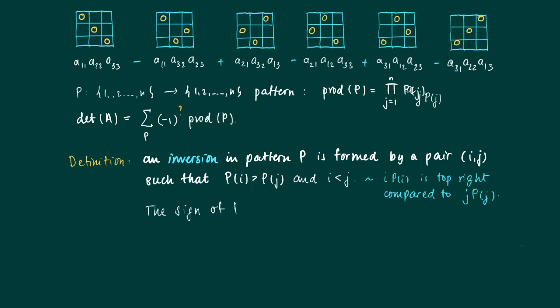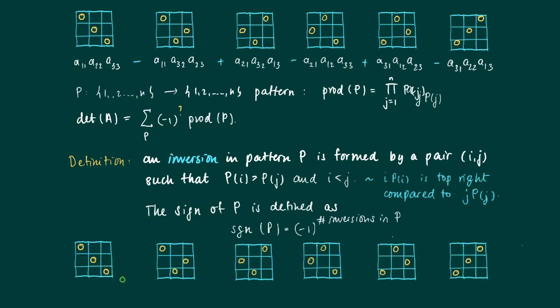And the sign of a pattern P is defined as follows: the sign of P equals minus one to the power of the number of inversions in P. So this means that when we have an odd number of inversions in P, then the sign is minus one, and one otherwise.